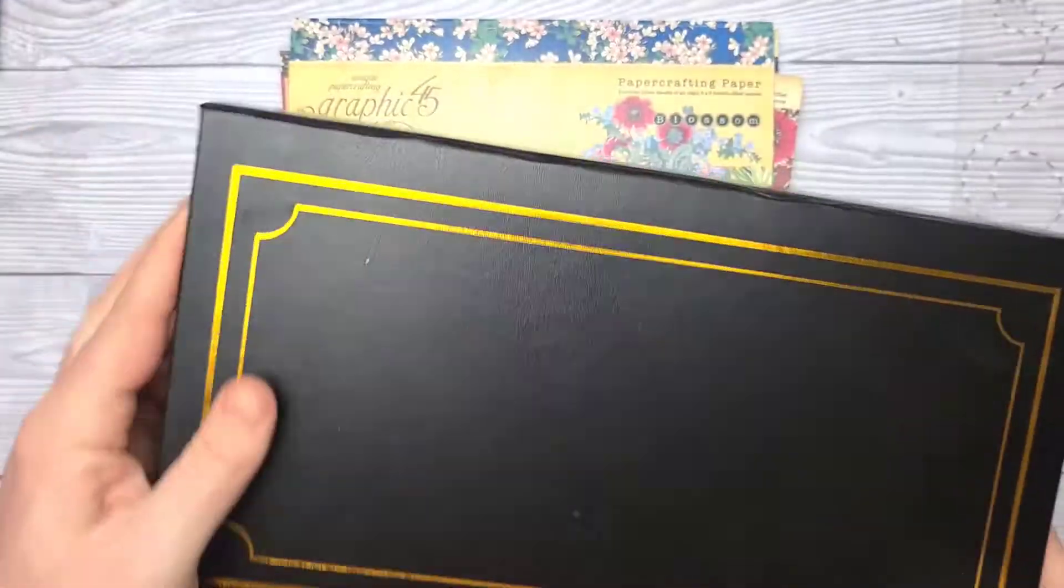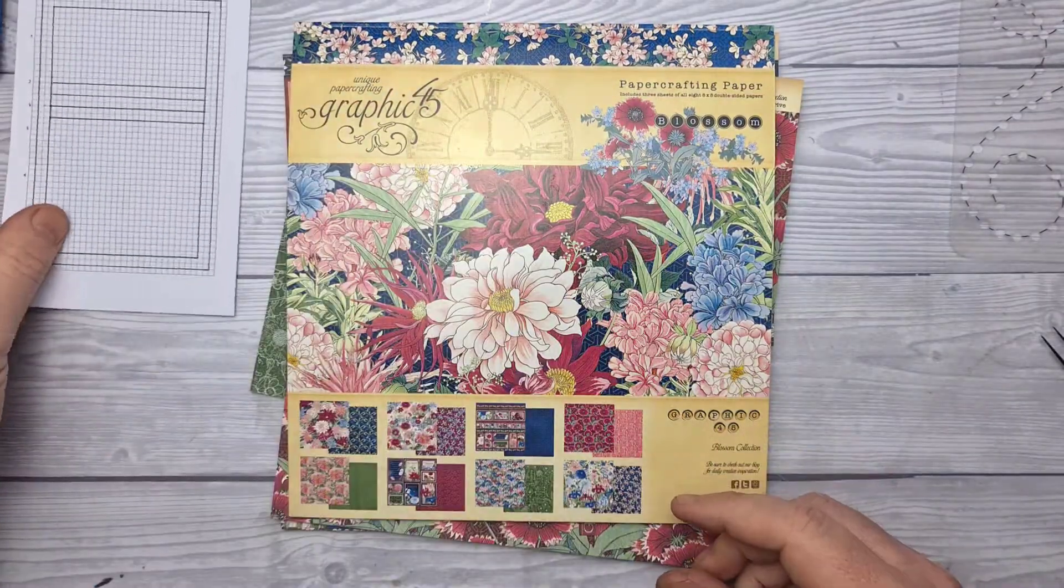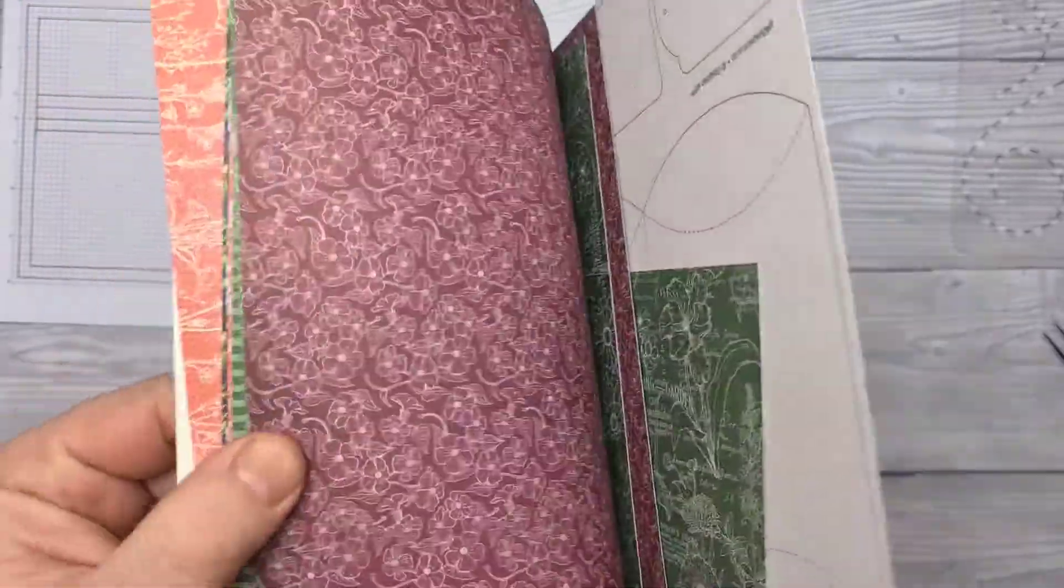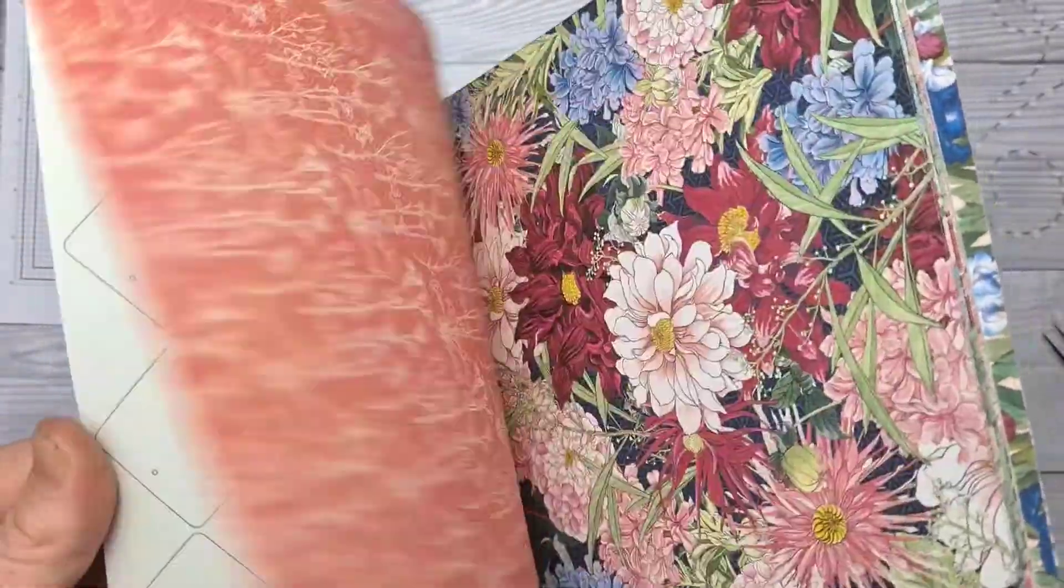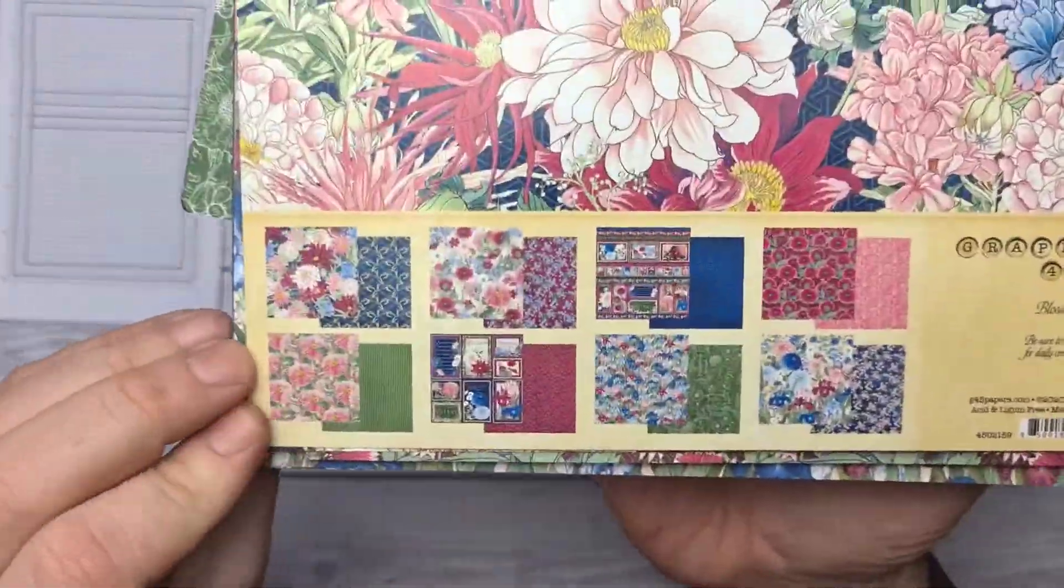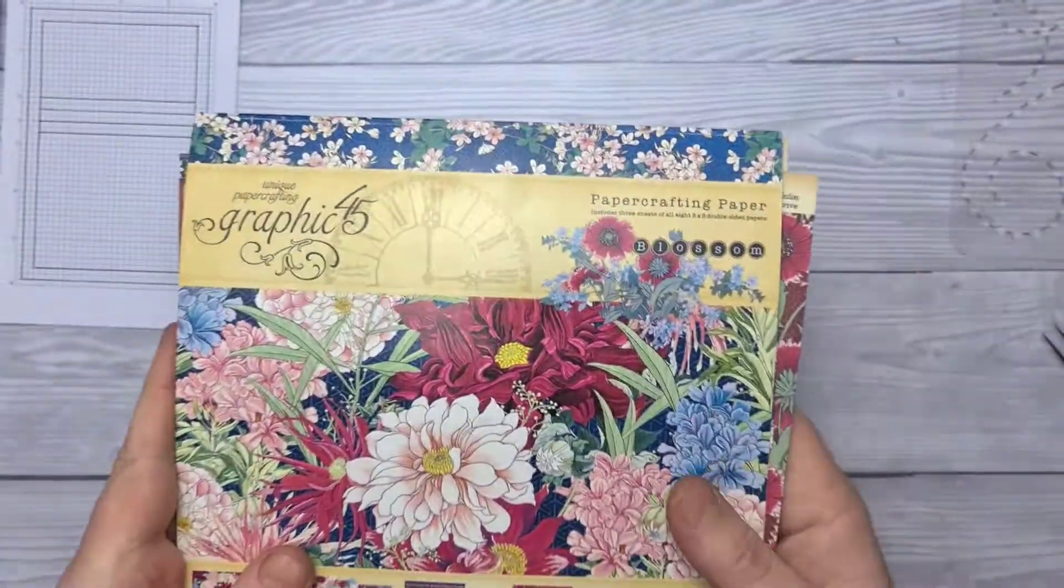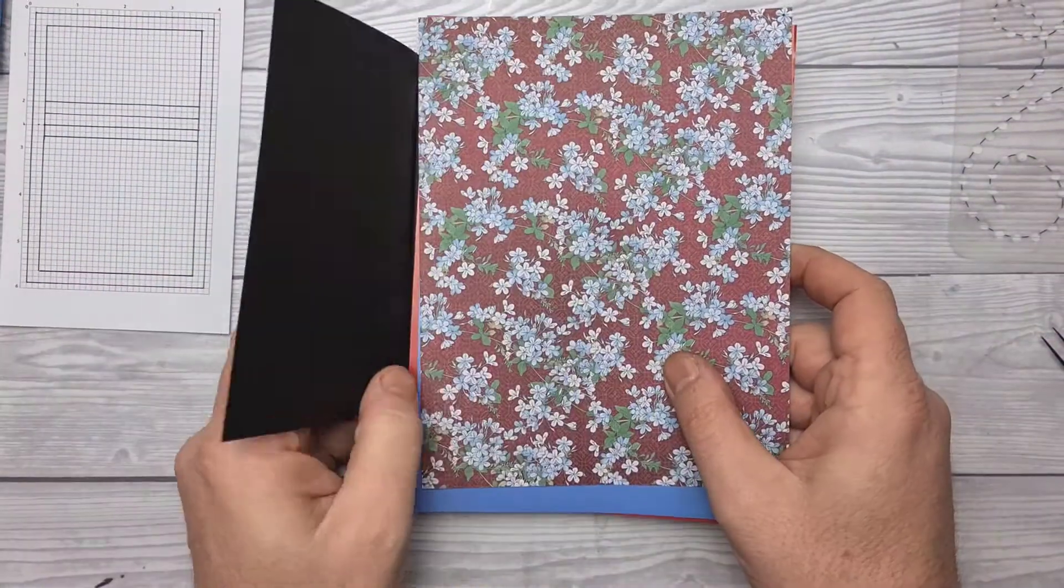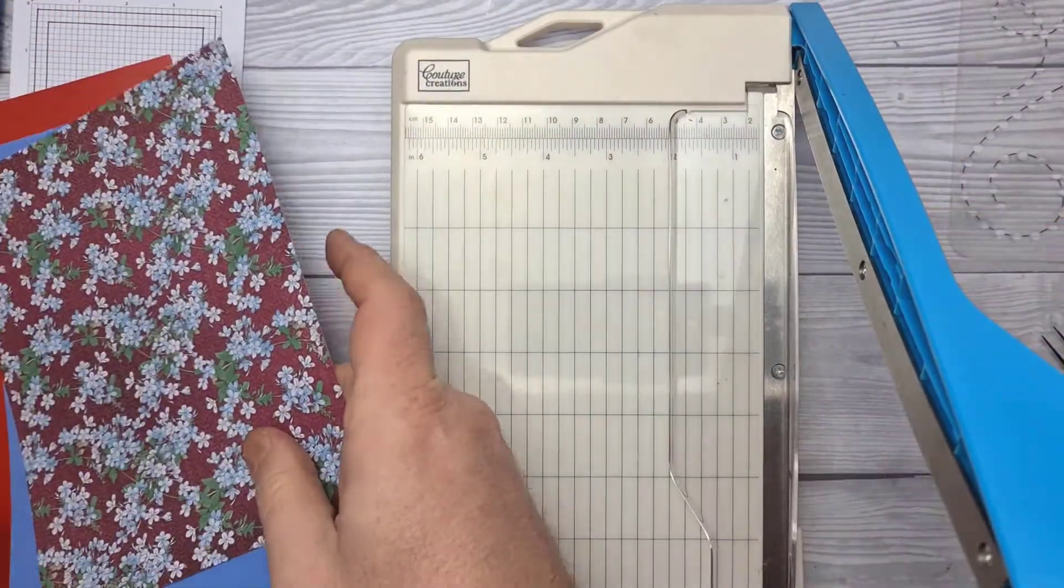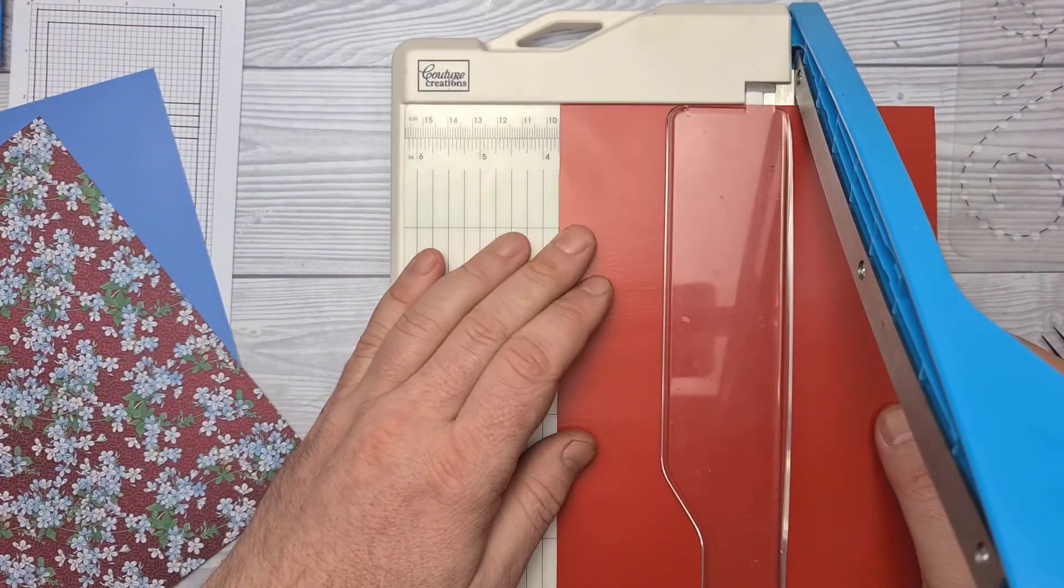So the card layout that I'm using is this one and I will put that to one side. I'm using the Graphic 45 papers again today, as you can see I've cropped into them quite a bit but that's what you get in that pad. And I'm going to team it up with some black and coloured card stock and I will now start chopping that down.